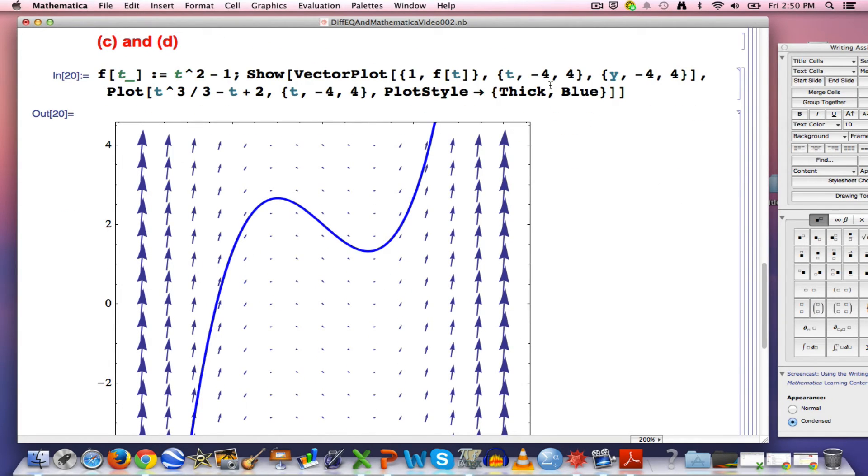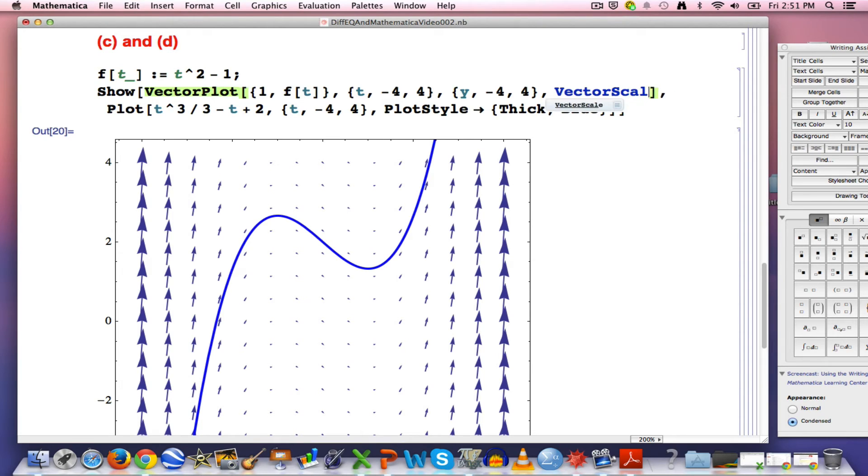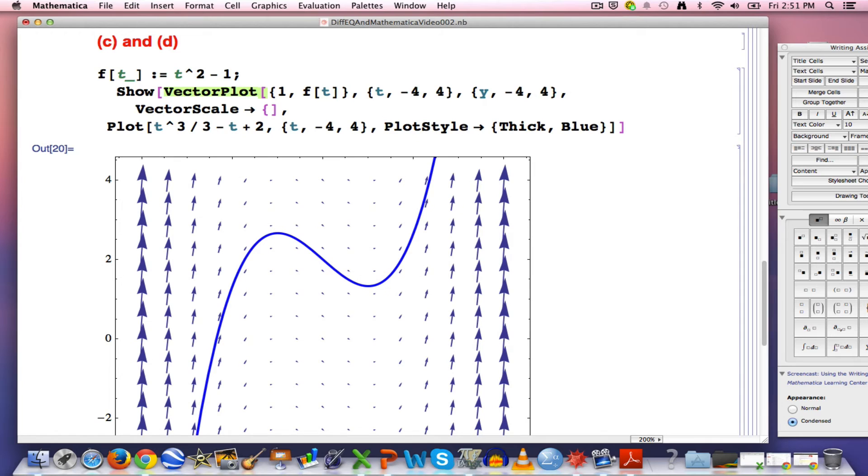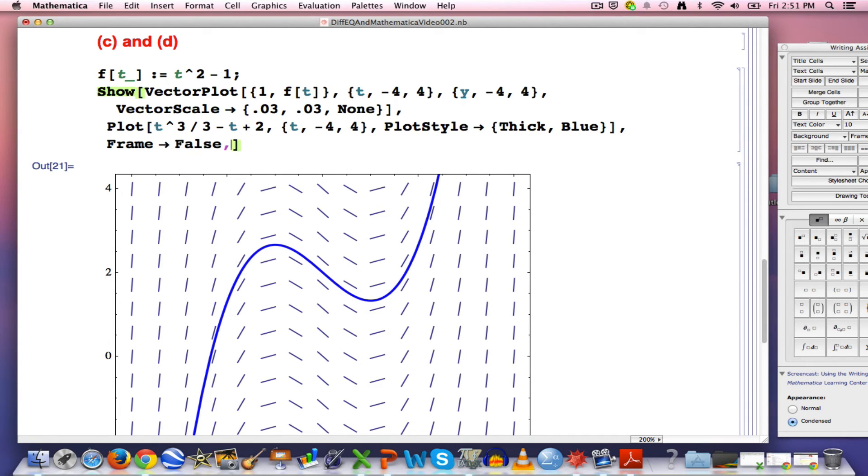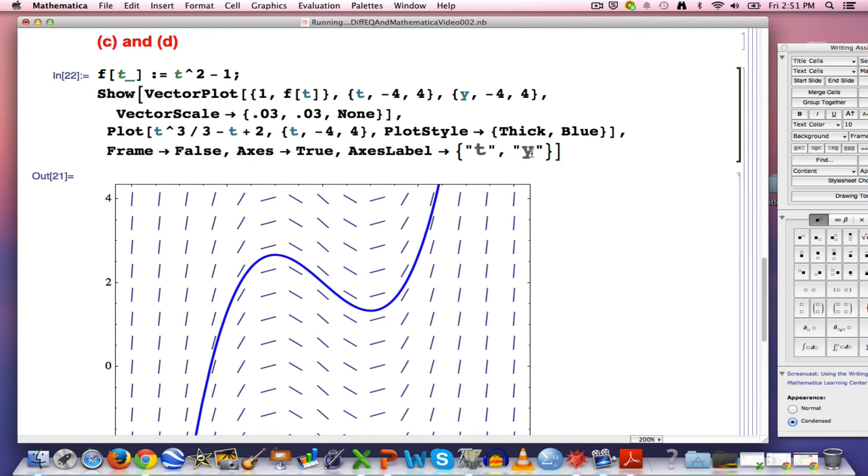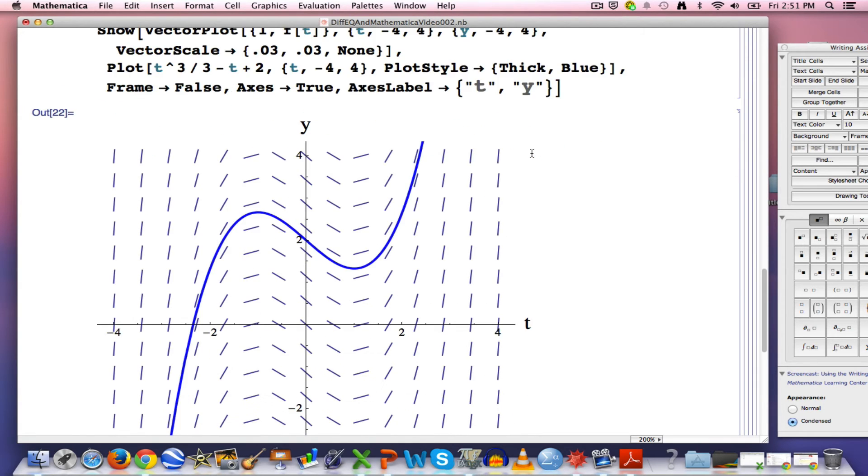I can add some other options to make it more ideal. If I type VectorScale arrow, and then choose .03, .03, none, it will make those arrows not look like arrows, it will make them look like line segments, which is what you would want for a slope field, and they should all have the same length. That's a nice option. I'm also going to get rid of that frame. I like to get rid of the frame in this situation. I like to add in some axes. I like to label the axes. These are all options that will help me do these things. I should label the axes with a t and a y, and let me make these bigger font. I can enter that code doing a shift return, and now we see a more ideal kind of graph for the situation.